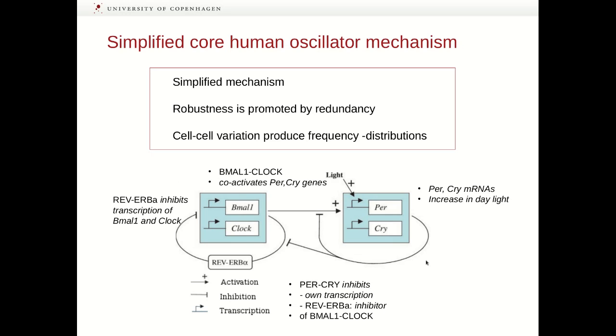First, I would like to show you a simplified schematic of the mechanism of the core oscillator in human beings. The aspects that are left out of this mechanism promote robustness to the oscillations. Moreover, variations between cells give rise to different levels of protein expression, which gives rise to slightly different frequencies of oscillations, and that explains why you have frequency distribution among individual cells. I will briefly try to take you through this mechanism.